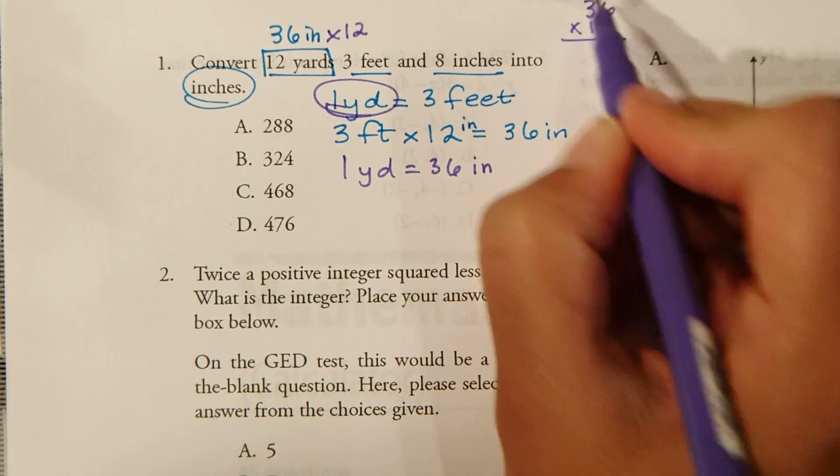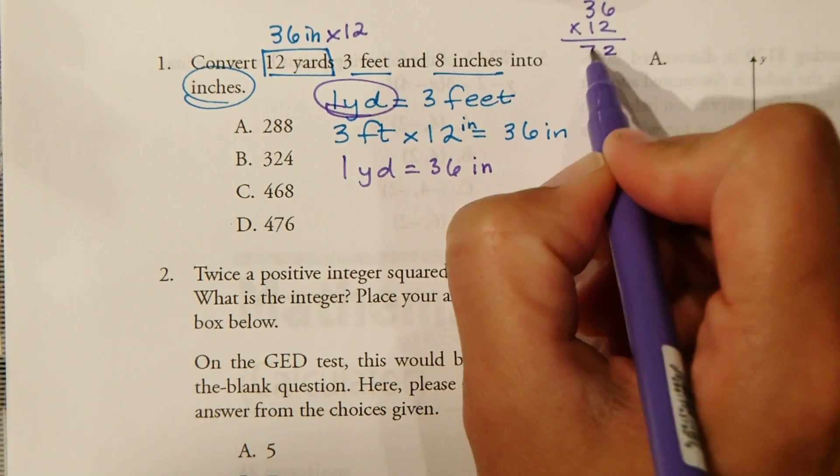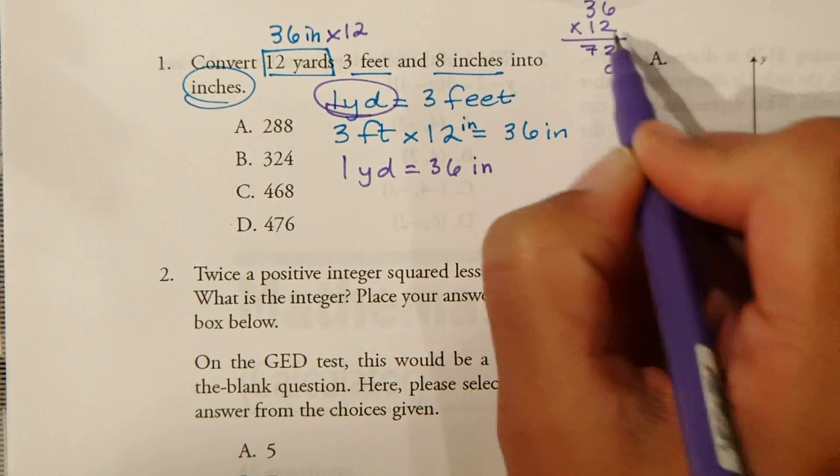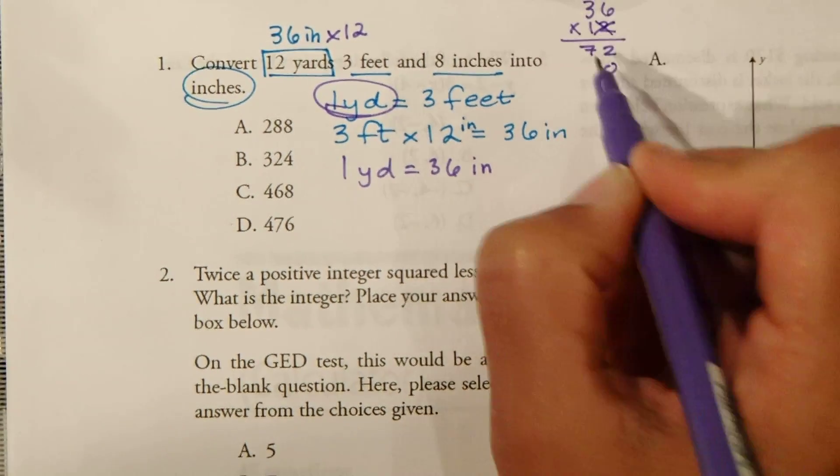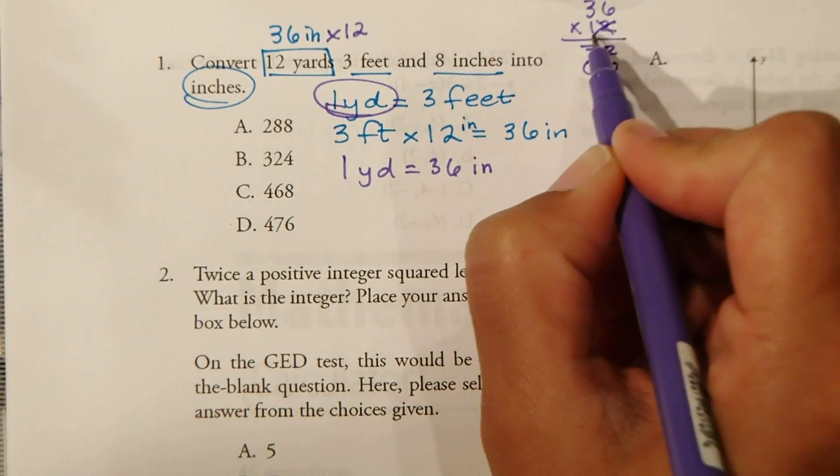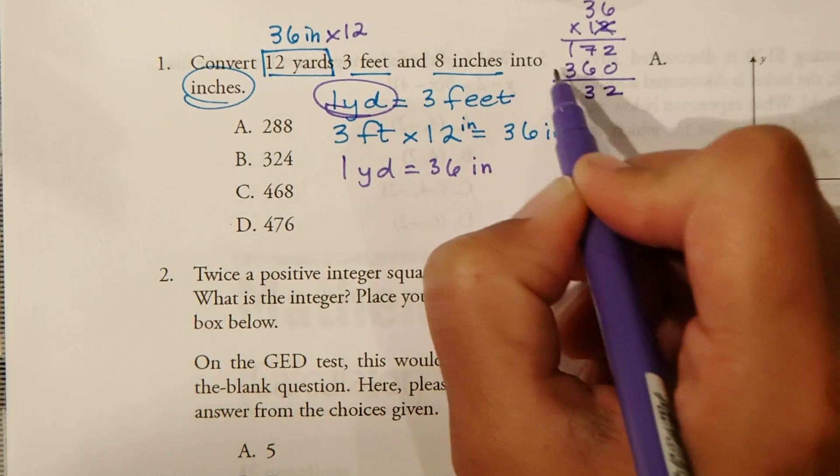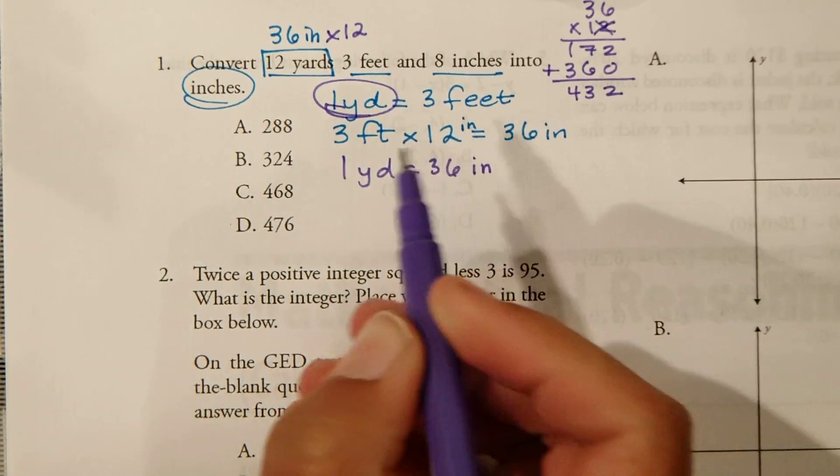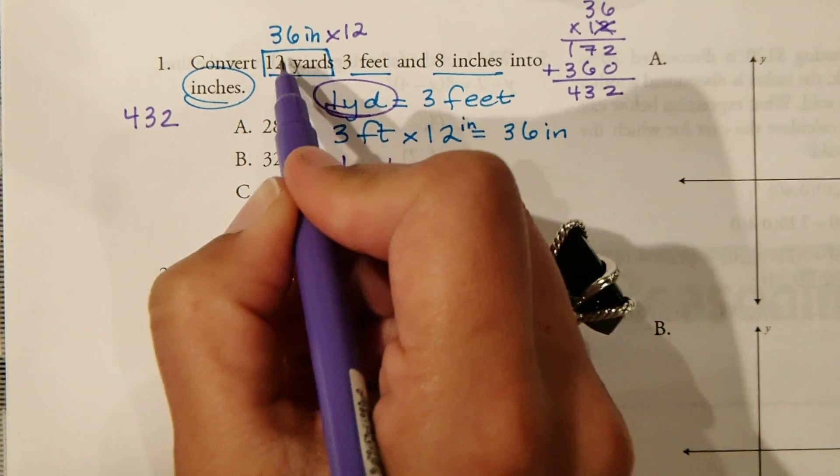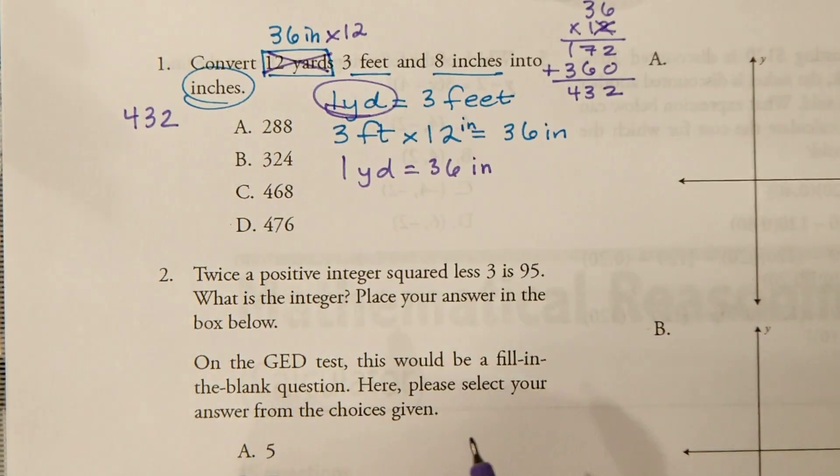So 36 times 12. 2 times 6 is 12. 2 times 3 is 6, plus 1 is 7. Bring down our 0. Cancel. Get rid of that. 1 times 6 is 6. 1 times 3 is 3. So that's 2. This is 13. And this is 4. So we've got, first of all, we've got 432 for this one. So we're done here. I'm going to go ahead and X that one out.